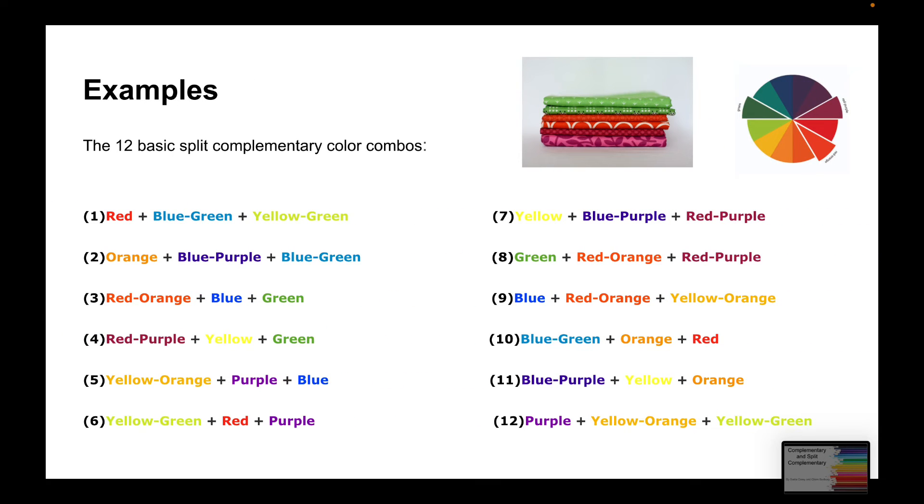So, here are some examples of split complementary colors. We've got red, blue green, and yellow green, orange, blue, purple, blue green, and so on. So, there are 12 basic split complementary color combos.